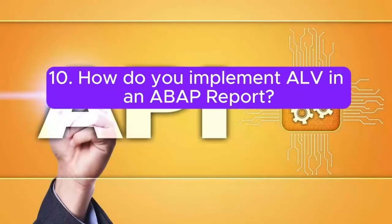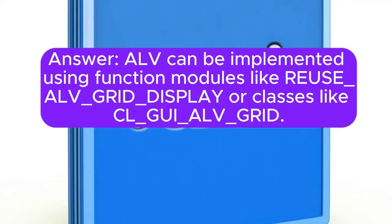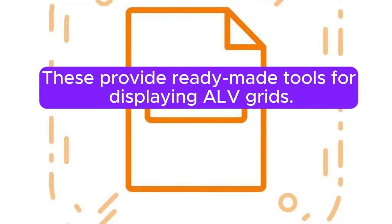Question 10: How do you implement ALV in an ABAP report? Answer: ALV can be implemented using function modules like REUSE_ALV_GRID_DISPLAY or classes like CL_GUI_ALV_GRID. These provide ready-made tools for displaying ALV grids.